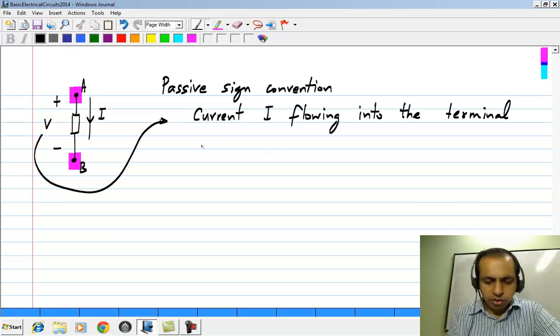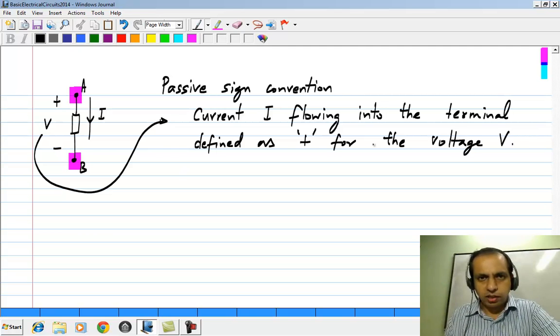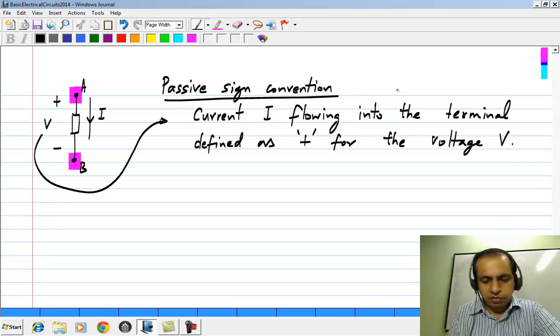Current I is flowing into the terminal defined as plus for the voltage V. We will see later why this is called passive sign convention when we come to power and energy, but this is the convention that we will use.